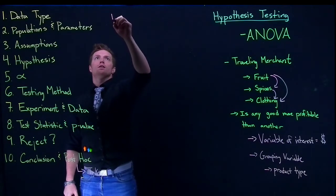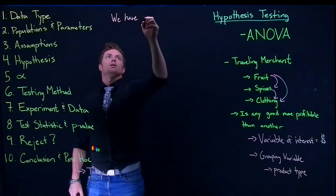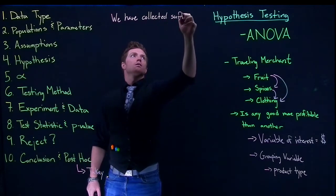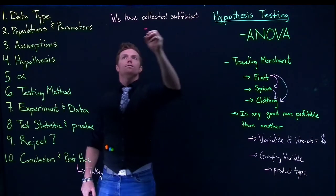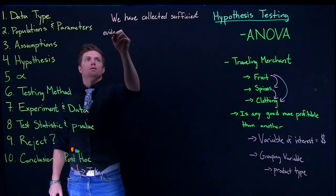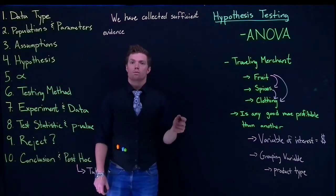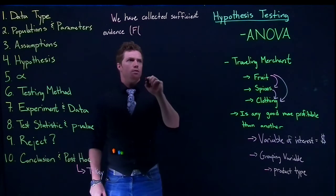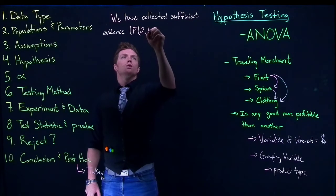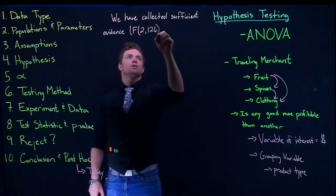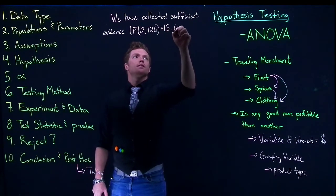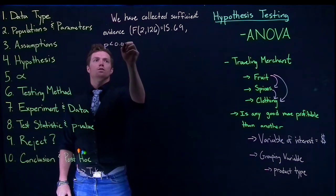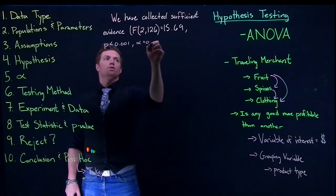So we will start off very similarly with we have collected sufficient evidence. And then from here we need to actually report our test statistic. So we've got F and from what we had before it was F(2,126) equals 15.69, p was less than 0.001, alpha equals 0.05.